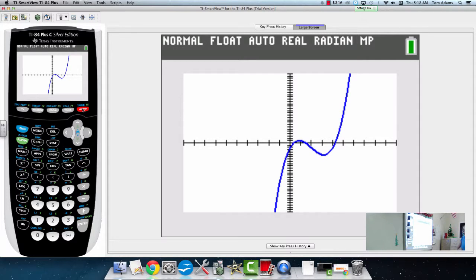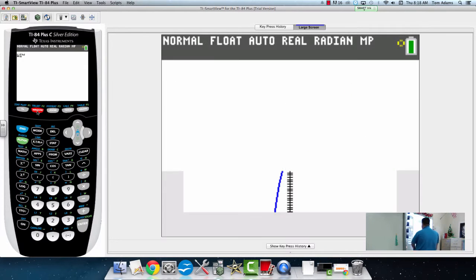We just graph it, and I'll probably have to adjust my window. We got lucky. I am going to adjust my window a little bit so we can see it a little better. I don't know, what do you guys think, minus five and five?